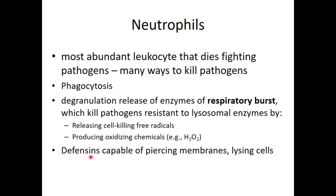Neutrophils also have defensins that pierce membranes and lyse cells. They have multiple different mechanisms to break down pathogens because bacteria come in all sorts of shapes and sizes with different cell membrane compositions and cell walls. Our immune system evolved tens of thousands of years ago — well before the first hospital or antibiotic — so our bodies had to develop ways to fight off these infections.